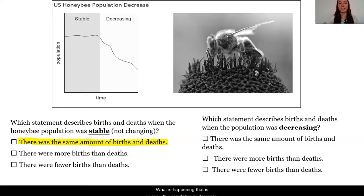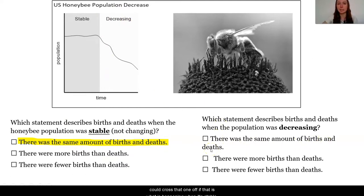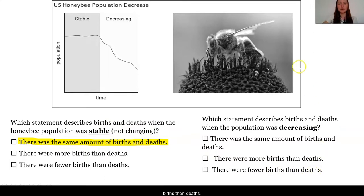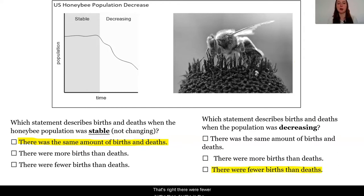What is happening that is causing the population to decrease? If the same amount of births and deaths is what happens when it's stable, we can cross that off. There were more births than deaths? Or there were fewer births than deaths? That's right — there were fewer births than deaths in the population, meaning that there were more deaths than births.